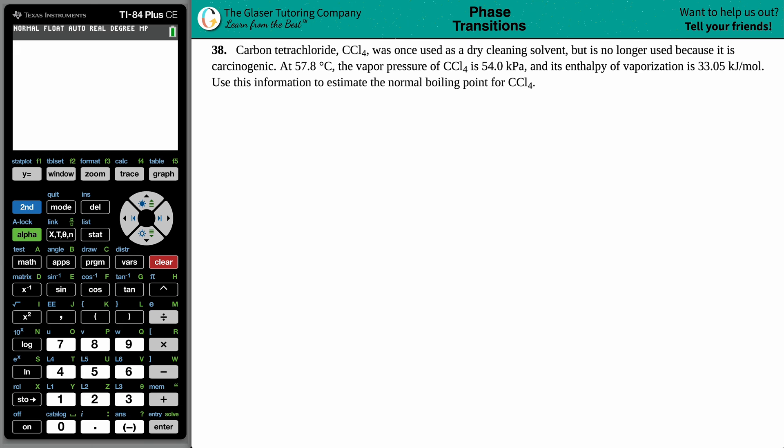Number 38: Carbon tetrachloride, CCl4, was once used as a dry cleaning solvent but is no longer used because it is carcinogenic. At 57.8 degrees Celsius, the vapor pressure of CCl4 is 54.0 kilopascals, and its enthalpy of vaporization is 33.05 kilojoules per mole. Use this information to estimate the normal boiling point for carbon tetrachloride.